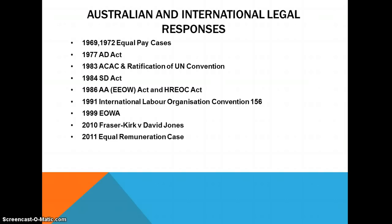In 1991, the Australian government ratified International Labour Organization Convention 156 on Workers with Family Responsibilities, which aimed to enable workers with family responsibilities to be employed without discrimination and without conflict between employment and family responsibilities. Then in 1999, the Equal Opportunity for Women in the Workplace Act 1999 (Commonwealth) amended and replaced the 1986 Affirmative Action Act, updating it to keep it current.